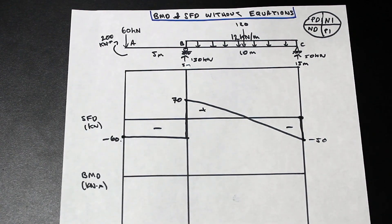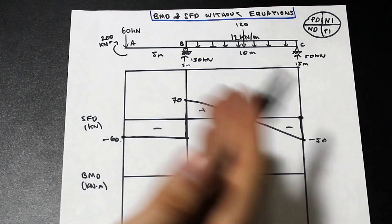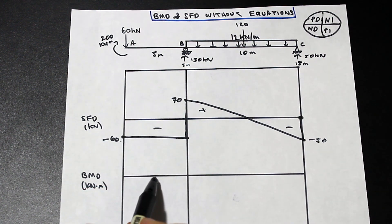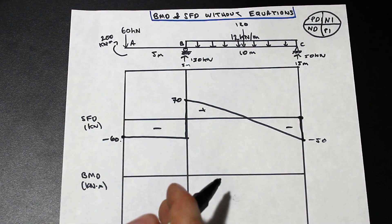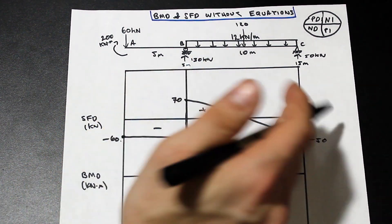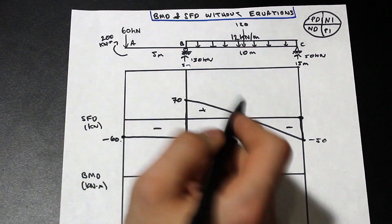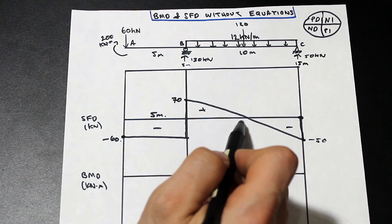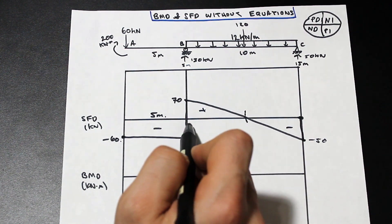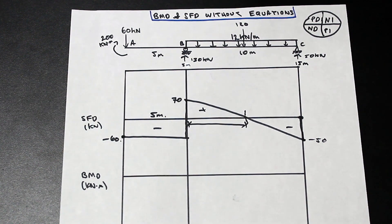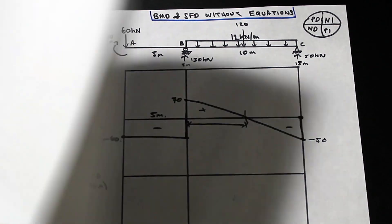Now, how do we draw the moment diagram from this? If you understand the concepts of shear and moment, the area under the shear curve is equal to the moment. So we're going to draw the moment diagram straight from the areas of the shear diagram. To get the areas, we need the bases and heights of all our shapes. But we don't know this distance here — where the shear crosses zero between B and C — so we need to solve for that distance first.